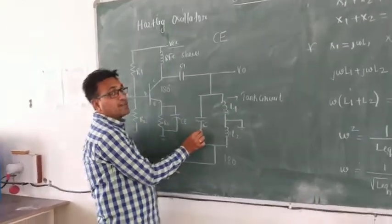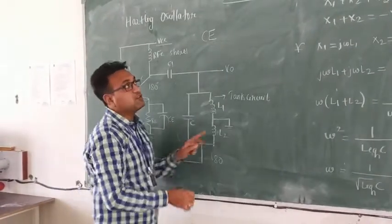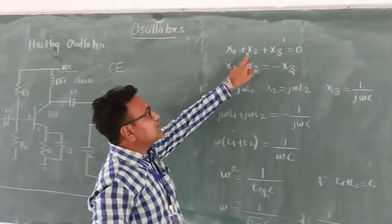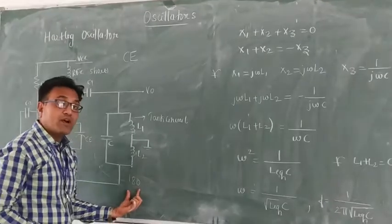So remember here, 2 inductors and 1 capacitor are available. So in order to obtain a 180 degree phase shift, we have the reactance equation: X1 plus X2 plus X3 should be equal to 0. Then only we get the phase shift of 180 degrees.